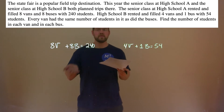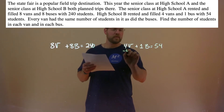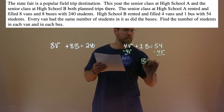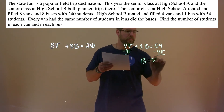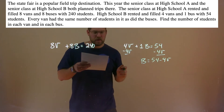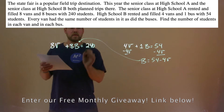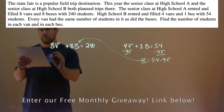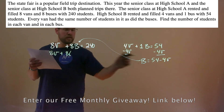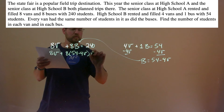Now we have two equations and we can solve the system of equations. I'm going to get b by itself, so I subtract 4v from both sides. And b equals 54 minus 4v. I'll take that information and plug it into b in the first equation. So we have 8v plus 8 times b, which is 54 minus 4v, equals 240.